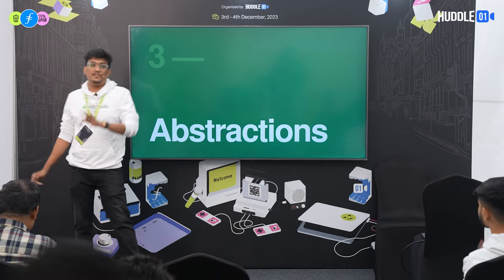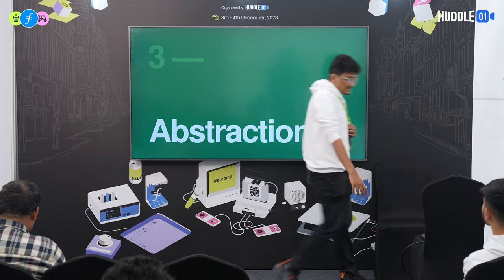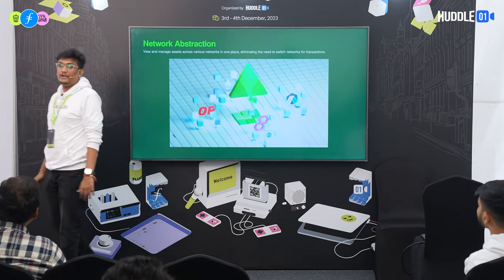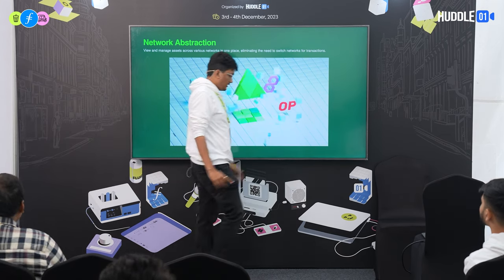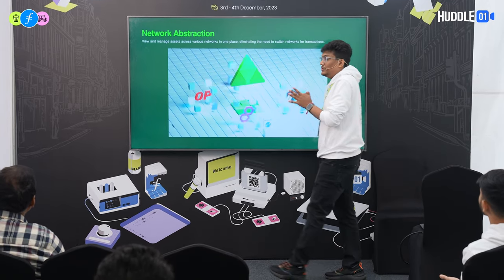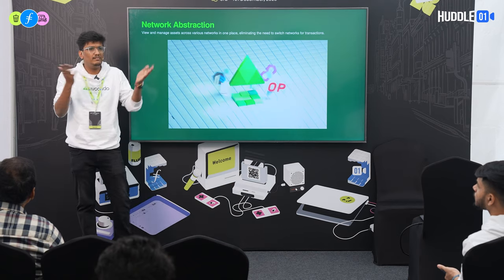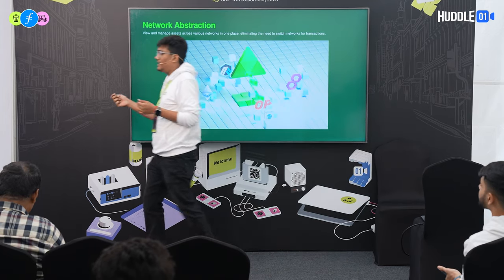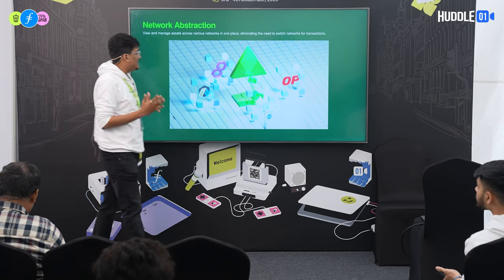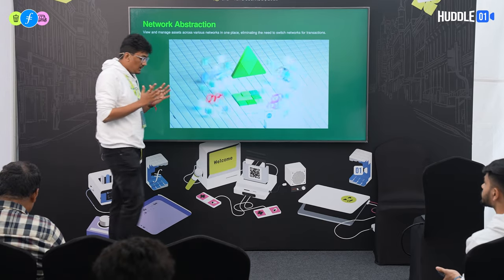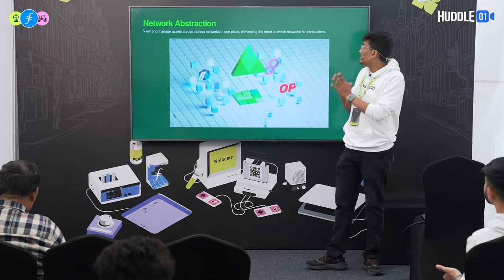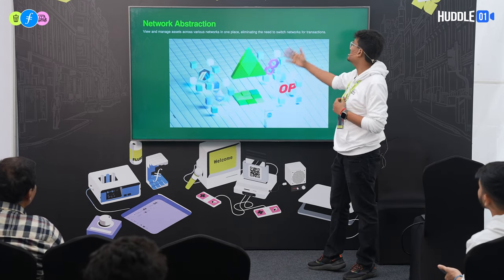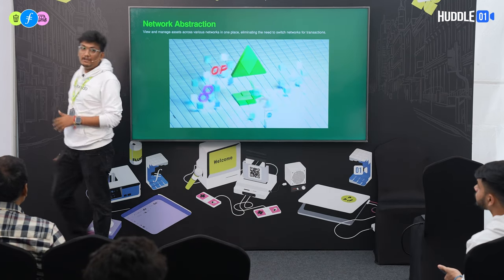Avocado has three core abstractions. The first is network abstraction — think of it like a universal remote that controls your TV, set-top box, and soundbar. Similarly, network abstraction is a master network that controls the underlying networks. Just being on the Avocado network, you're able to send transactions to Optimism, Ethereum, Arbitrum, Polygon, and more. We currently support more than 11 chains, with three more coming soon.